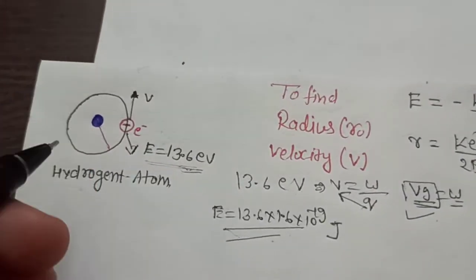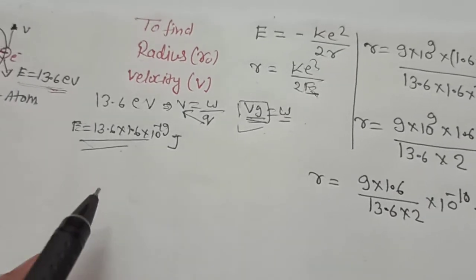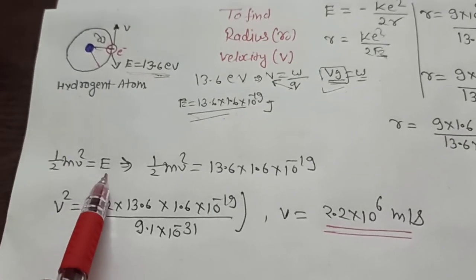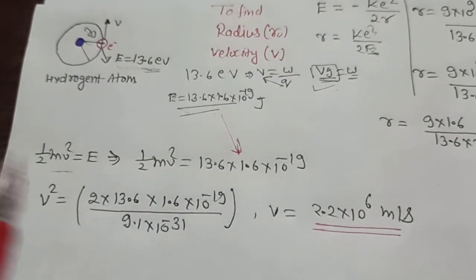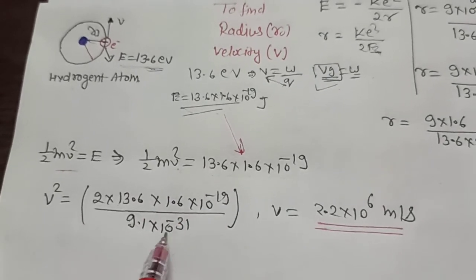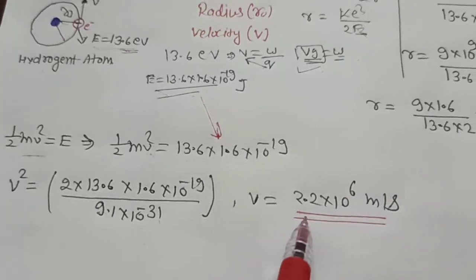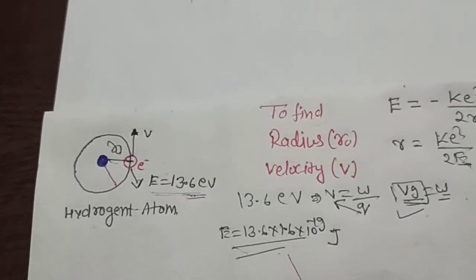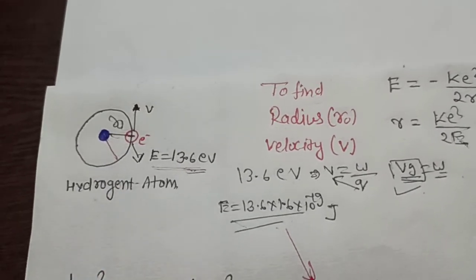So the radius of the first orbit that we get is 0.53 Angstroms, which is R₀. Now we have to find the velocity. We use the kinetic energy formula: E = ½mv². Rearranging, v² = 2E/m, and the mass of the electron is 9.1×10⁻³¹ kg. When we calculate, the value of velocity comes out to approximately 2.2×10⁶ meters per second. So the electron revolves in the first orbit of the hydrogen atom with this velocity and this radius.